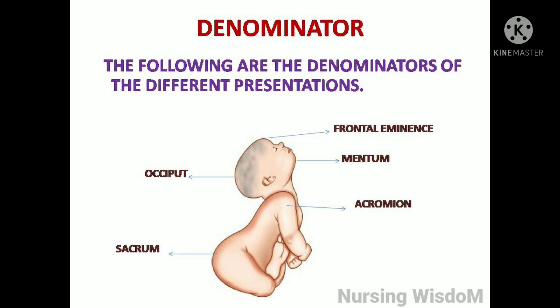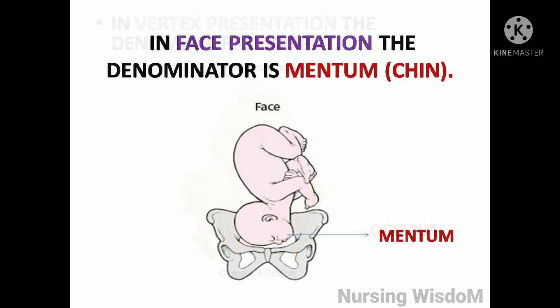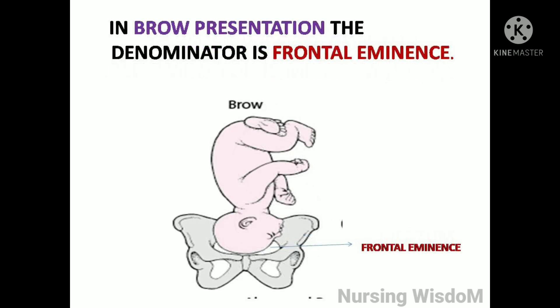The following are the denominators of the different presentations. In vertex presentation the denominator is occiput. In face presentation the denominator is mentum or chin. In brow presentation the denominator is frontal eminence.